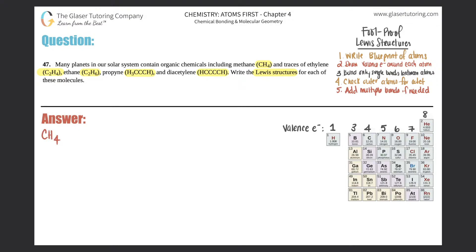Just know that when you're doing Lewis structures, this is always for covalent molecules, so it has to be between all non-metals — it's always sharing electrons. In Lewis structures we will see single bonds, double bonds, and triple bonds. Also, hydrogen can never be the central atom, so between carbon and hydrogen, carbon is going to be the central atom.